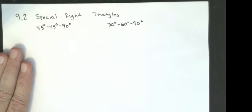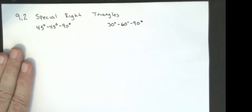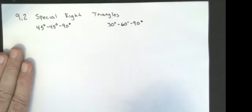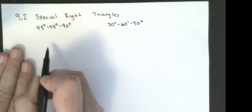What we're going to do is come up with generic formulas so that if I've got one of the legs or the hypotenuse of one of these triangles, instead of having to use the Pythagorean theorem over and over again, because these triangles are used frequently, I can just apply generic rules.